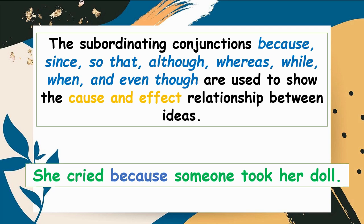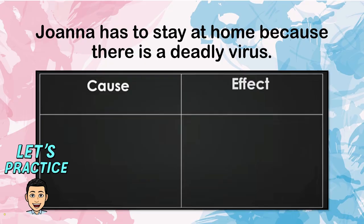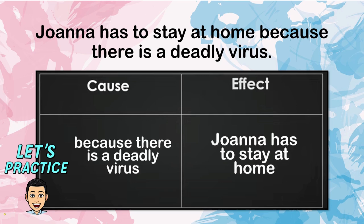For example: 'She cried because someone took her doll.' Now, let's practice. Can you identify the cause and effect in this sentence? 'Joanna has to stay at home because there is a deadly virus.' The cause in the given sentence is 'because there is a deadly virus,' and the effect is 'Joanna has to stay at home.'